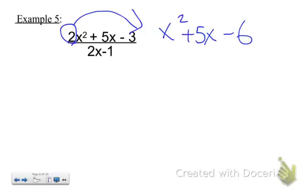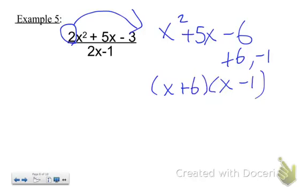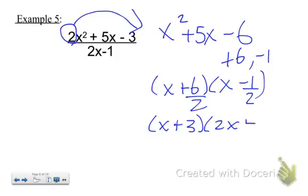Factors of negative 6 that, when added together, give you positive 5 would be positive 6 and negative 1. So, x plus 6, x minus 1. Don't forget to go back and divide by 2. Slide and divide. So you get x plus 3 times 2x minus 1.